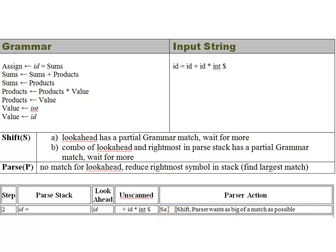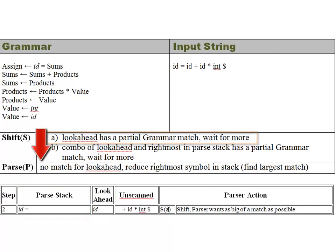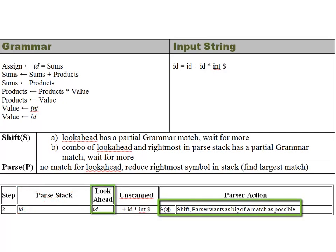In step two, the parse stack has grown and our look-ahead is an ID. This time we have a shift using condition A. Notice I check A before B, so there is a priority, but it will be one or the other. The ID itself is a partial match to both the assignment and value productions, so we're going to shift. I'm looking only at the look-ahead symbol here — the parser wants to be lazy, waiting for more input to see if there's a bigger match.